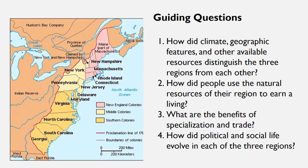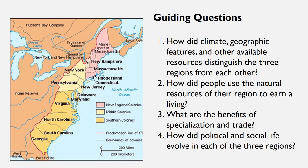Today's lesson will be answering four guiding questions. One, how did climate, geographic features, and other available resources distinguish the three regions from each other? Two, how did people use the natural resources of their region to earn a living? Three, what are the benefits of specialization and trade? And four, how did political and social life evolve in each of the three regions? So let's get started.